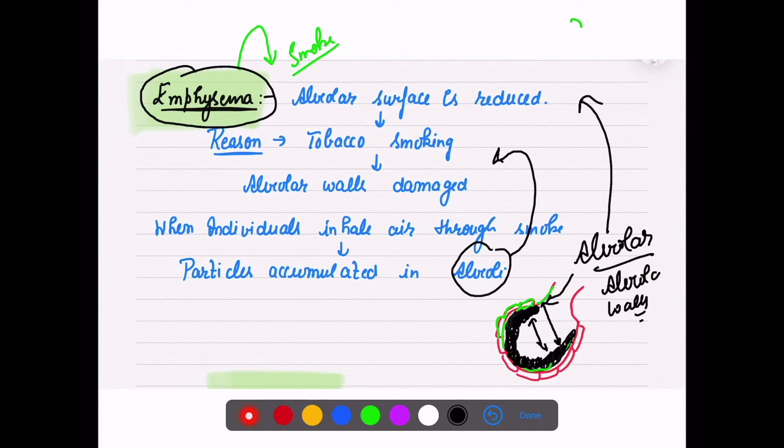You can imagine, that is why we are saying it sometimes leads to tobacco cancer and lung cancer also, not exactly because of emphysema. Emphysema is basically when the alveolar surface is getting damaged and the surface is getting reduced.